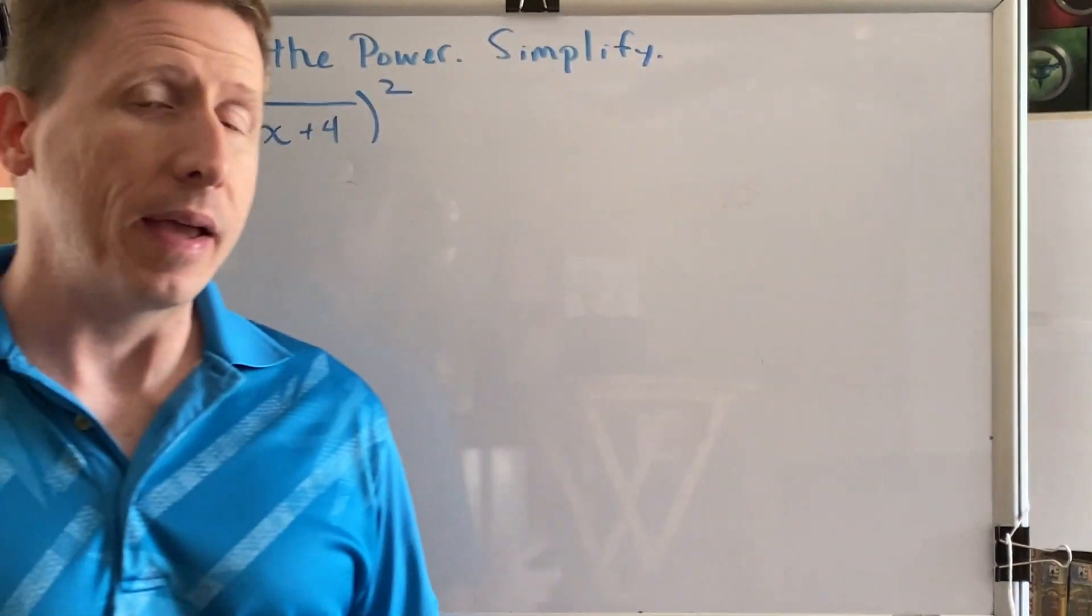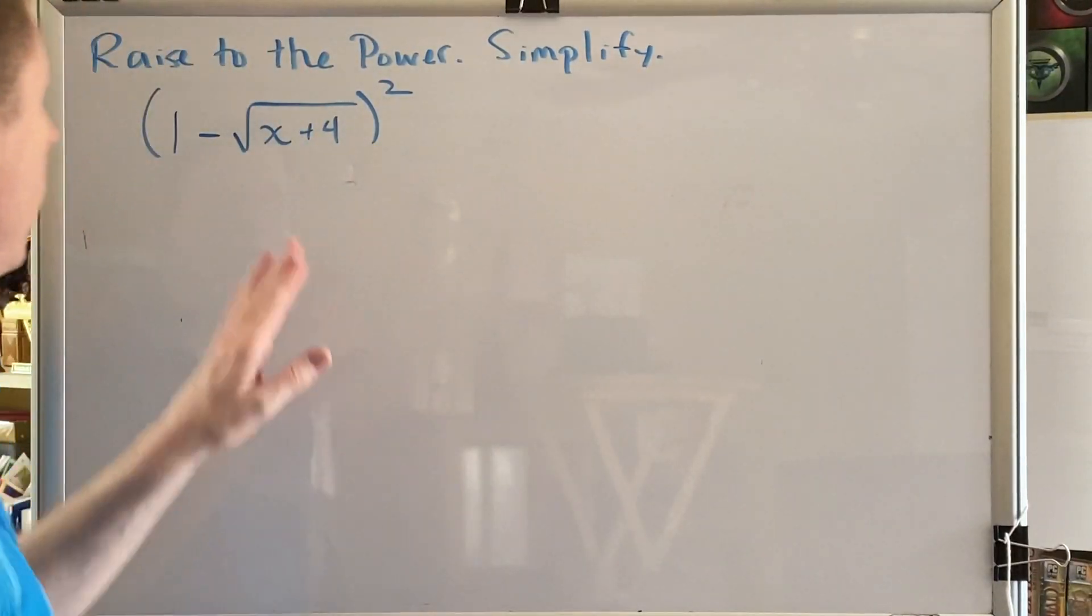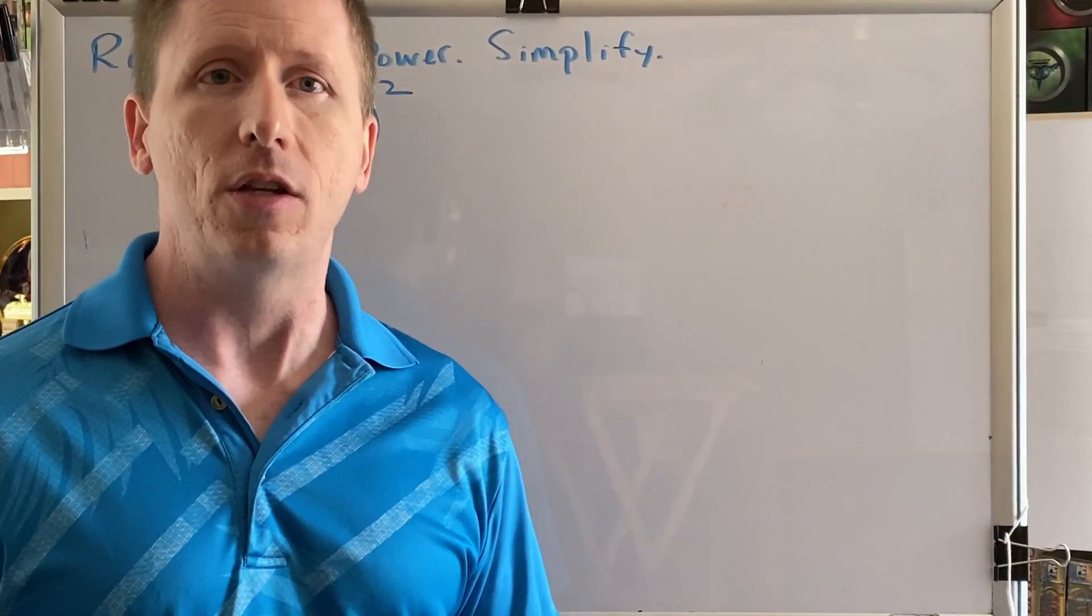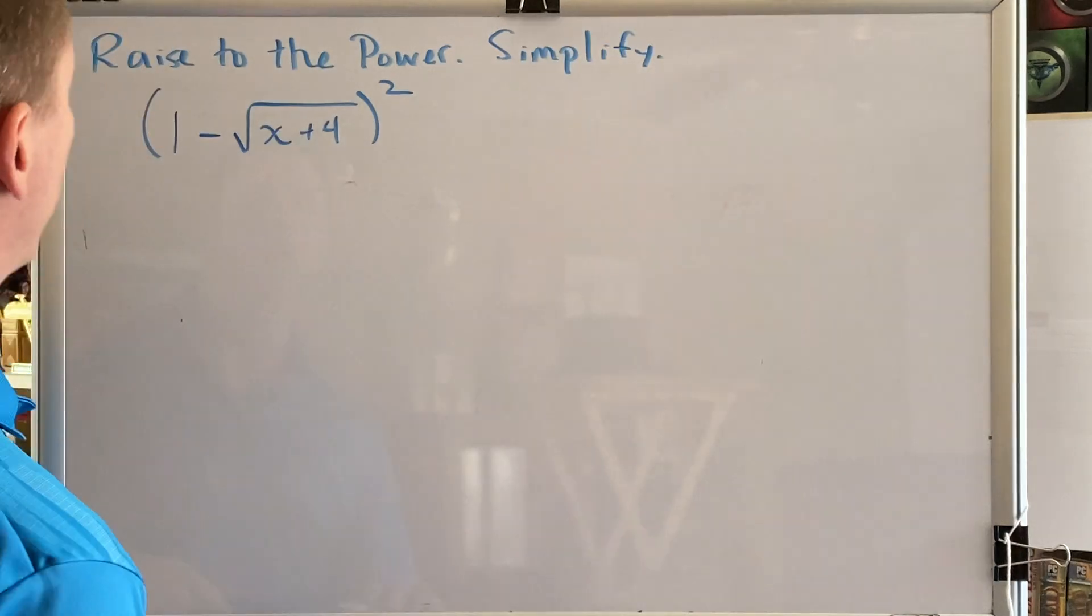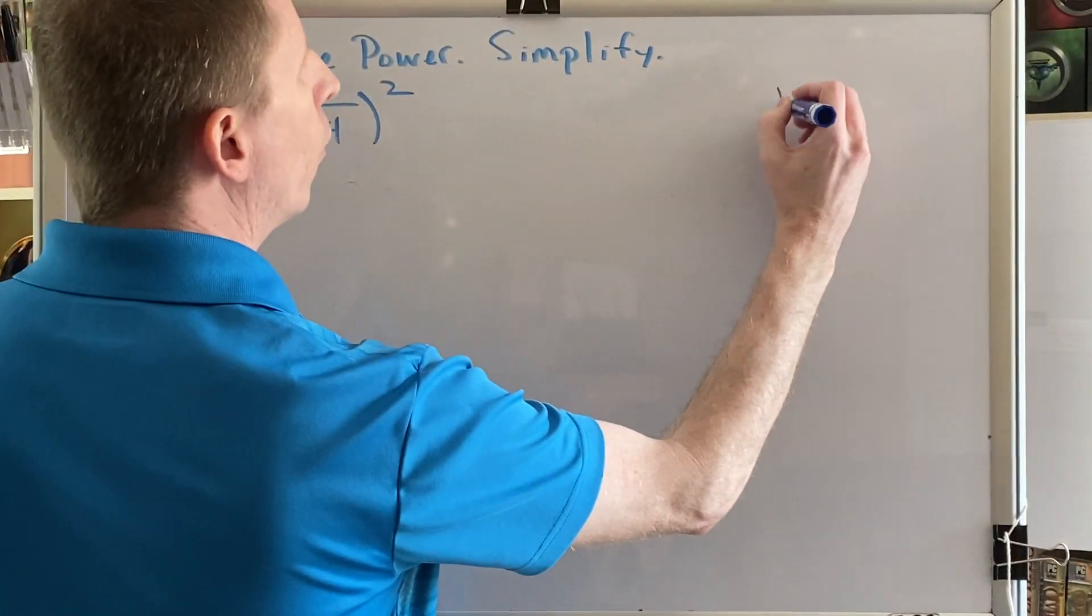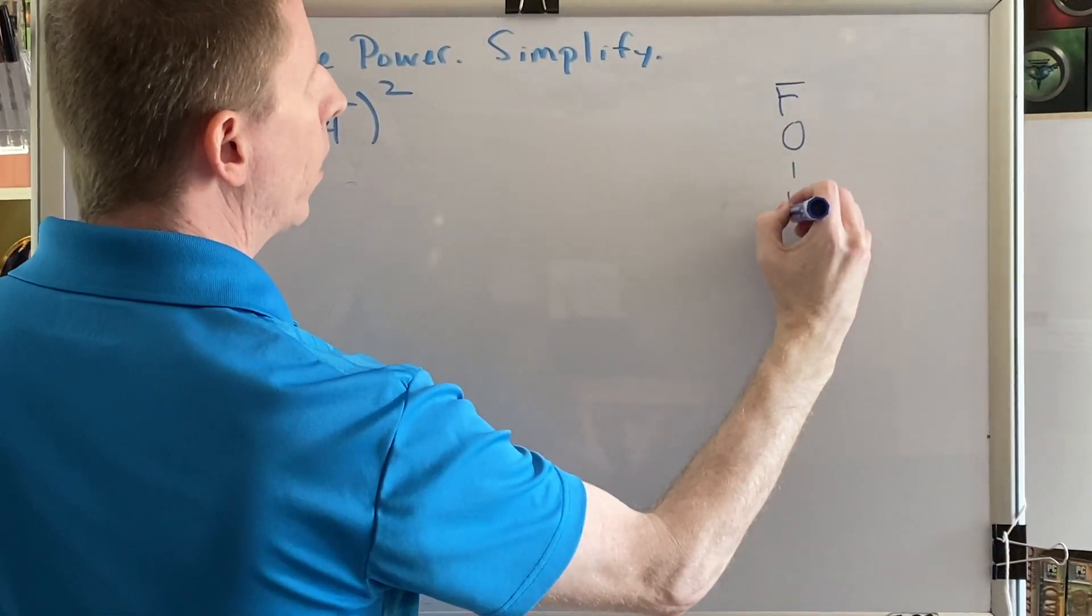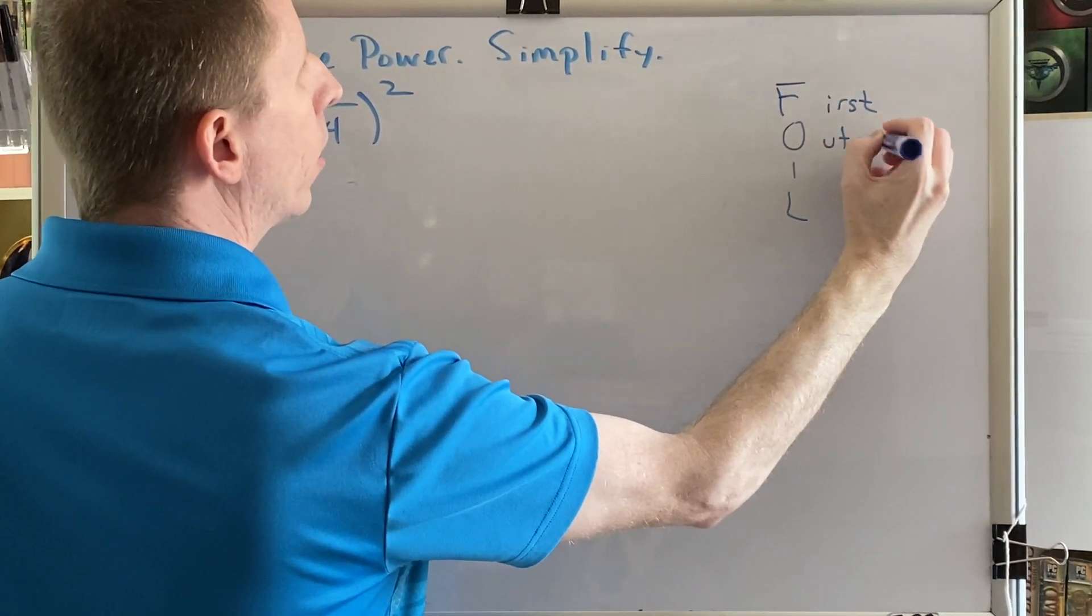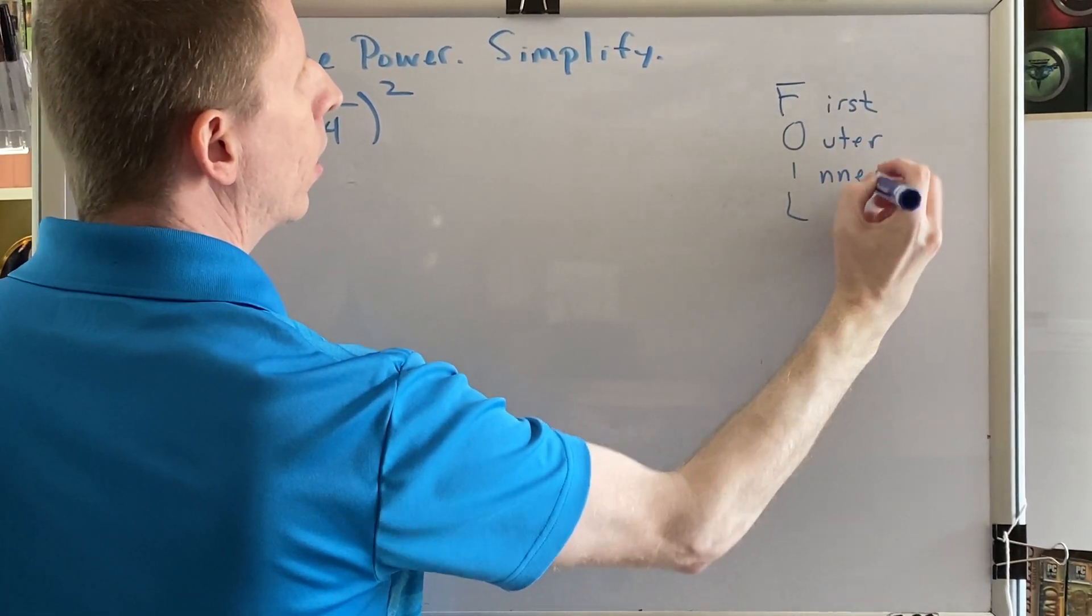The first thing we need to pay attention to is the symbol between the radical and the non-radical. That symbol is subtraction, which means we need to use the FOIL multiplication method. As a reminder, FOIL stands for first, outer, inner, last.